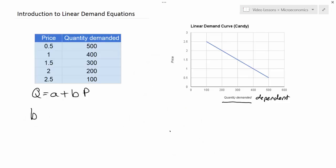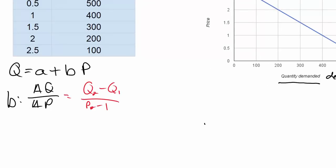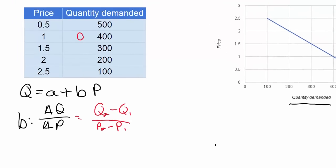We know that the b variable is the change in quantity resulting from a particular change in price. It's pretty easy to find that because all we need is two quantities and two prices from our demand schedule, and we can do Q2 minus Q1 and divide that by P2 minus P1.